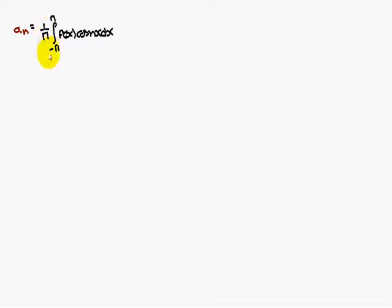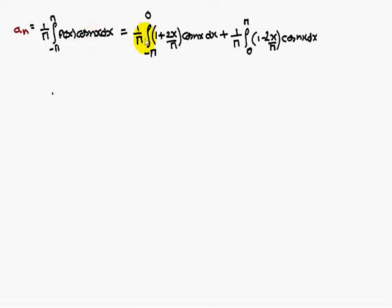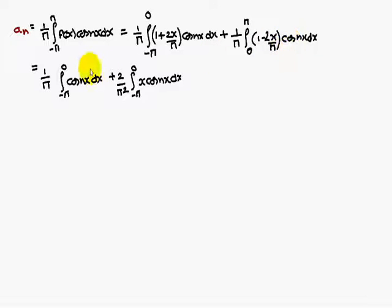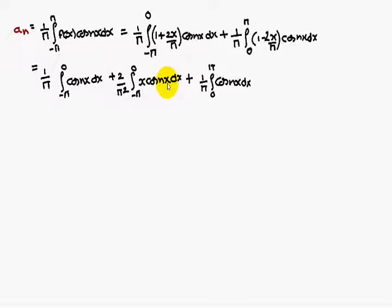aₙ is equal to 1 by pi integral minus pi to pi f of x cos nx dx. That is 1 by pi integral from minus pi to 0 of the function 1 plus 2x by pi times cos nx dx, plus 1 by pi integral from 0 to pi of 1 minus 2x by pi times cos nx dx.